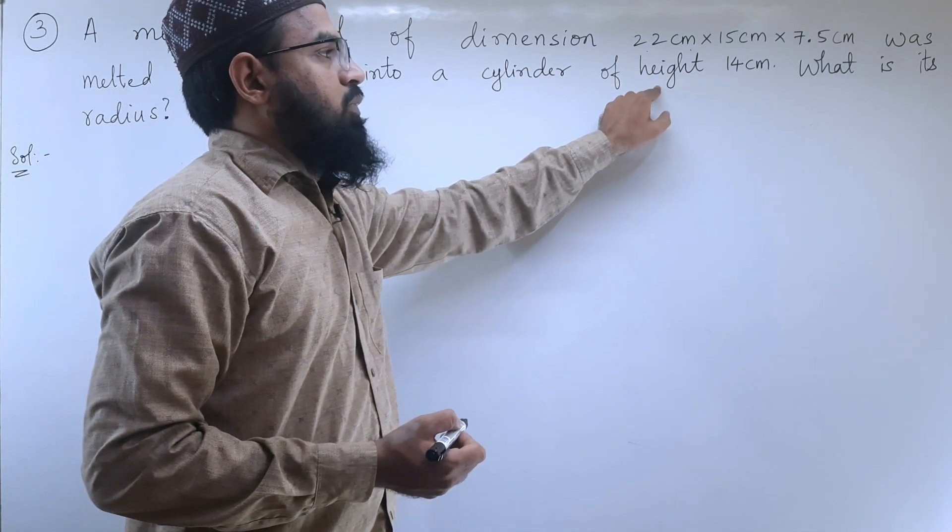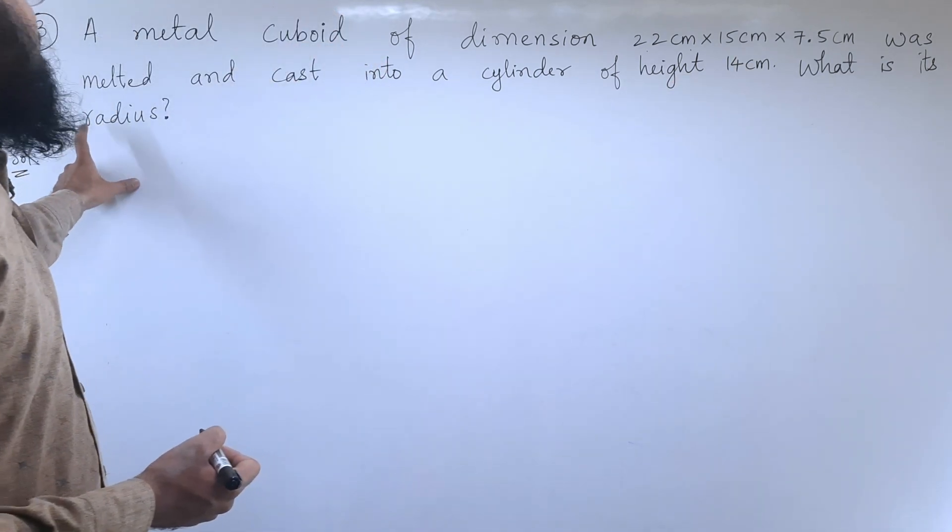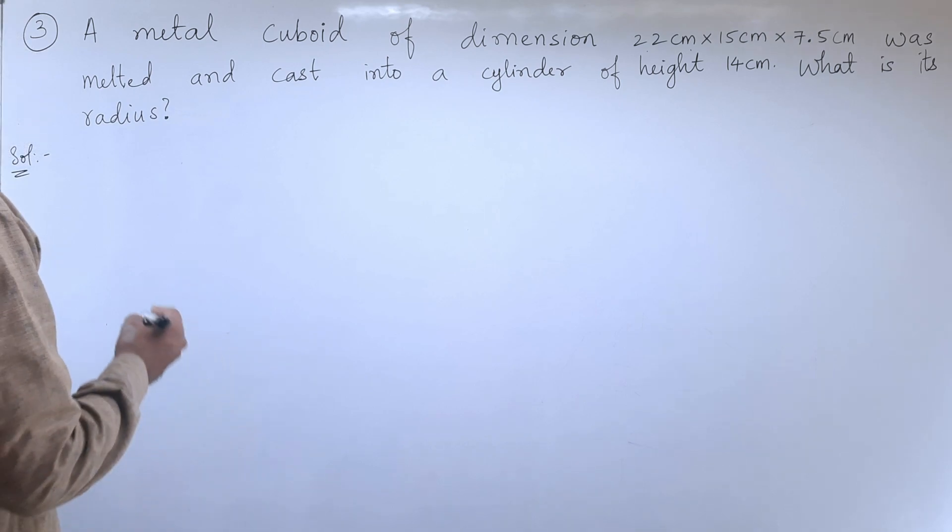The cylinder has a height of 14 centimeter, and we need to find out what is its radius.